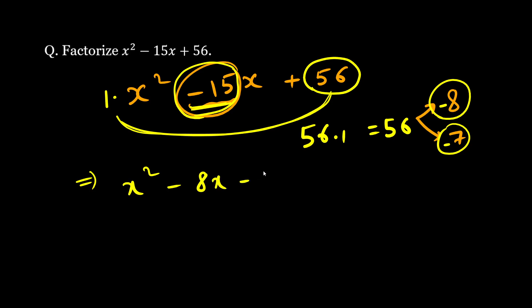...minus 8x minus 7x plus 56. Now from here I can take x common: x(x - 8). I can take minus 7 common: -7(x - 8).